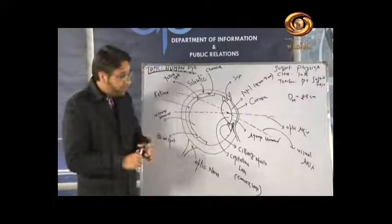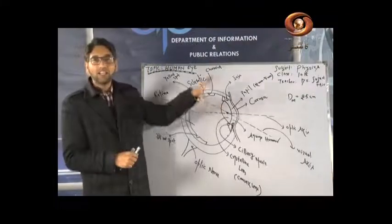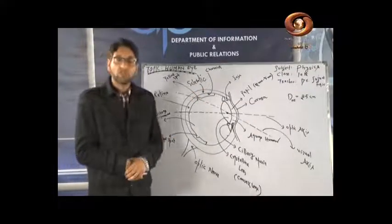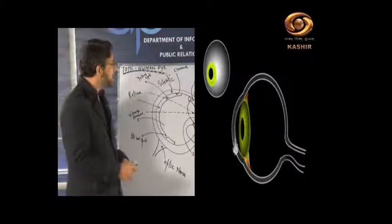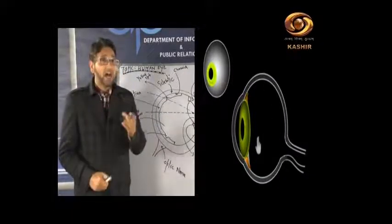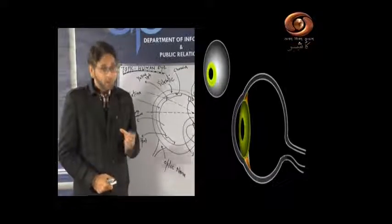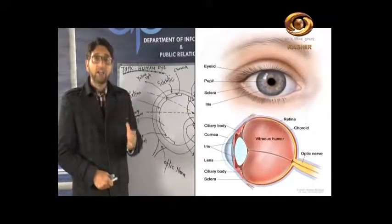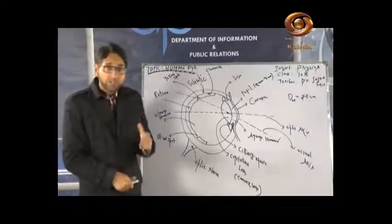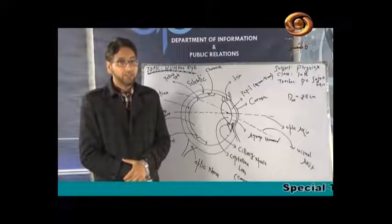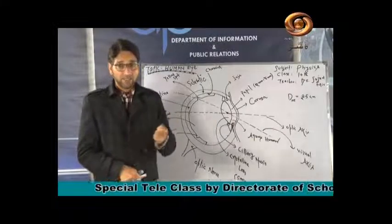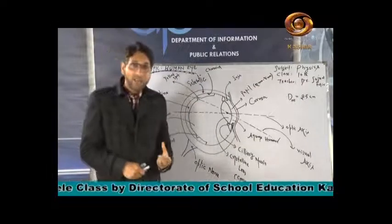Now, this eye has an outer cover. This outer cover is very dense and opaque. The function of this outer cover is to protect our eye. Because it is opaque, light cannot pass in or out through it. If it were not opaque, there would be illumination inside which would interfere with the image formed on the retina.